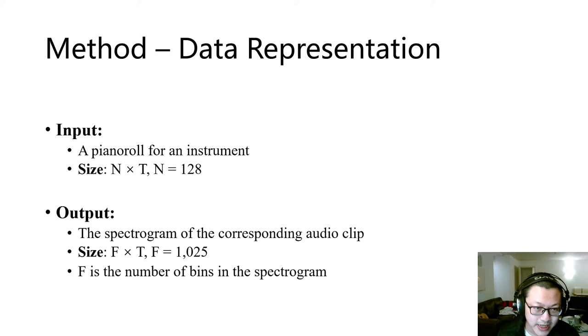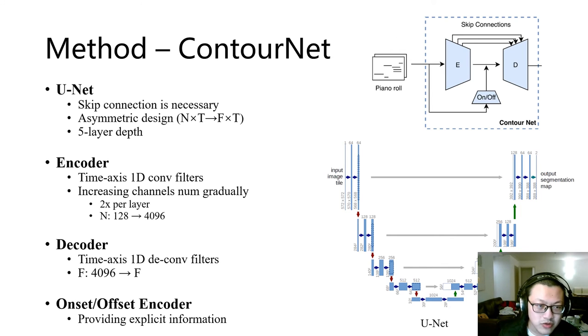Formally, the model takes as input a matrix of length T and height N, where N represents the MIDI pitches in 128 dimensions. The model outputs a corresponding spectrogram, also of length T, and of height number of bins, in this case 1025. The authors consider the module ContourNet as an image translation task, and use a five-layer U-Net as the implementation of ContourNet, as shown in the figures on the right.